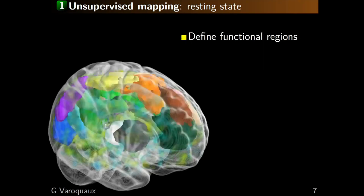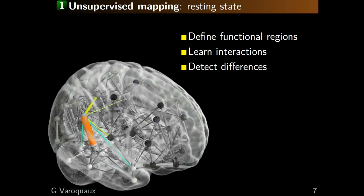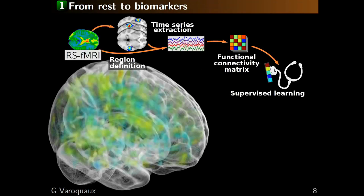This is an image of resting-state brain activity — nothing really sticks out, and if I played a movie it would just go by without you seeing anything. The way we tackle this is to decompose the brain activity into different functional regions, then learn interactions. Based on these interactions — an interaction graph we call a functional connectome — we can look across subjects and conditions and detect differences or perform a supervised learning task. This pipeline, going from resting-state fMRI to biomarkers, is important for neuropsychiatric diseases because it captures brain function, and we believe function is probably the right way to look at them.